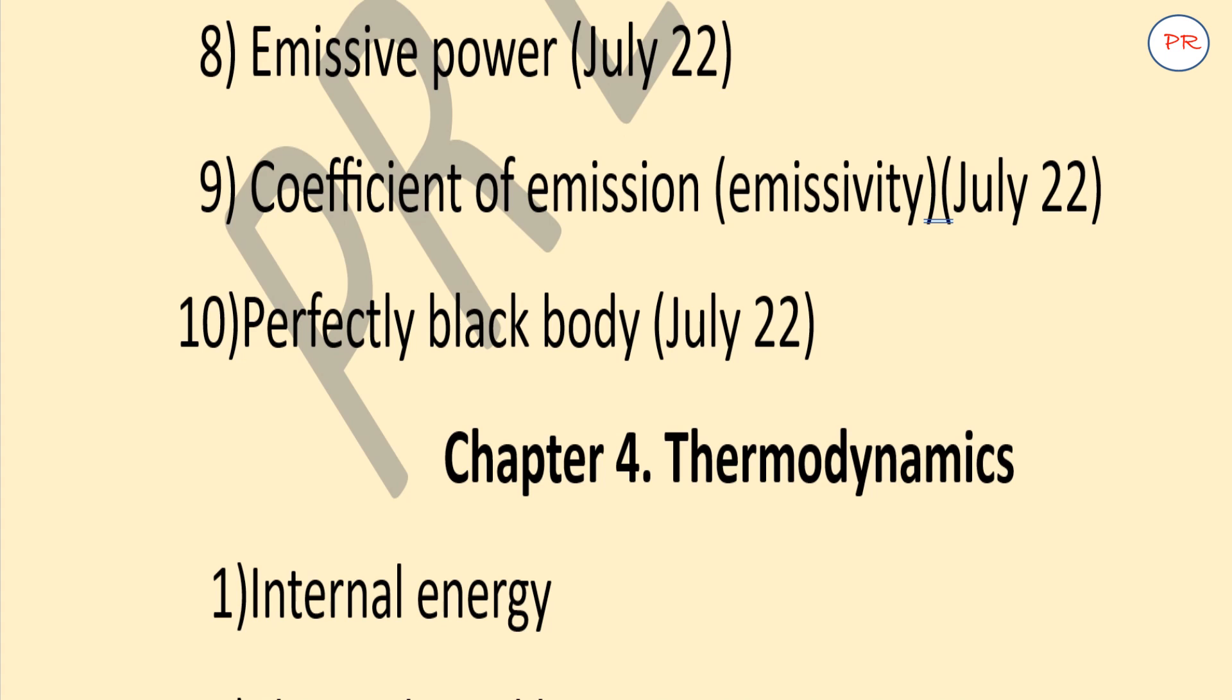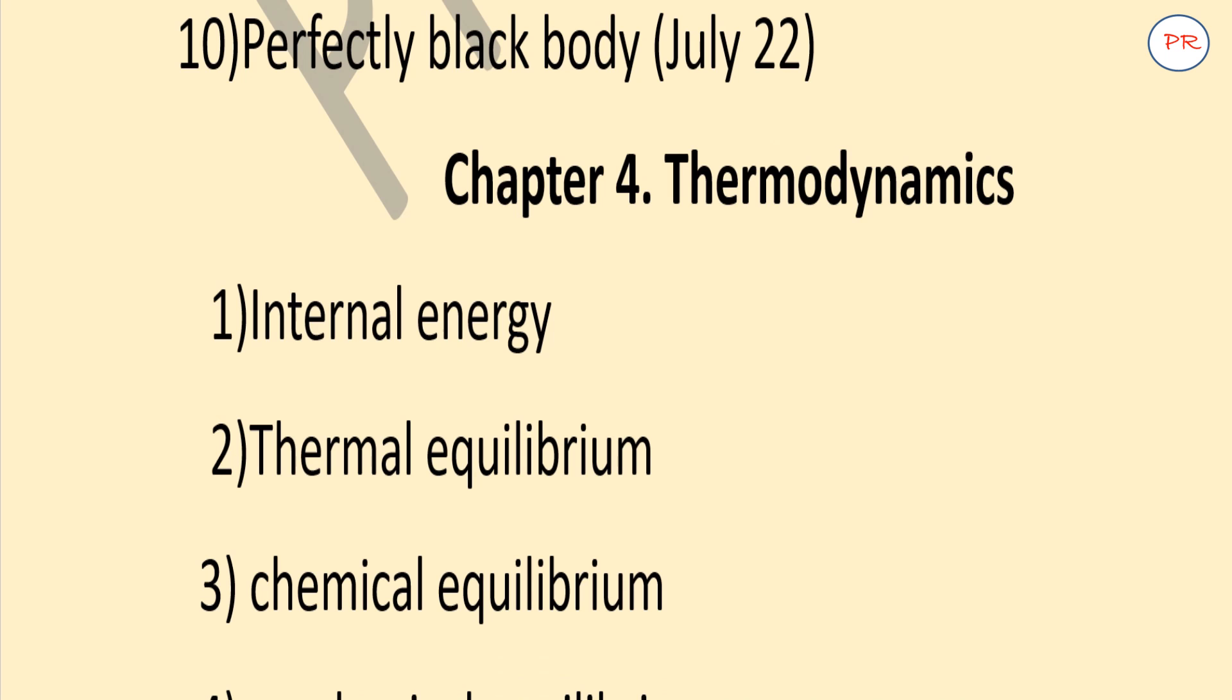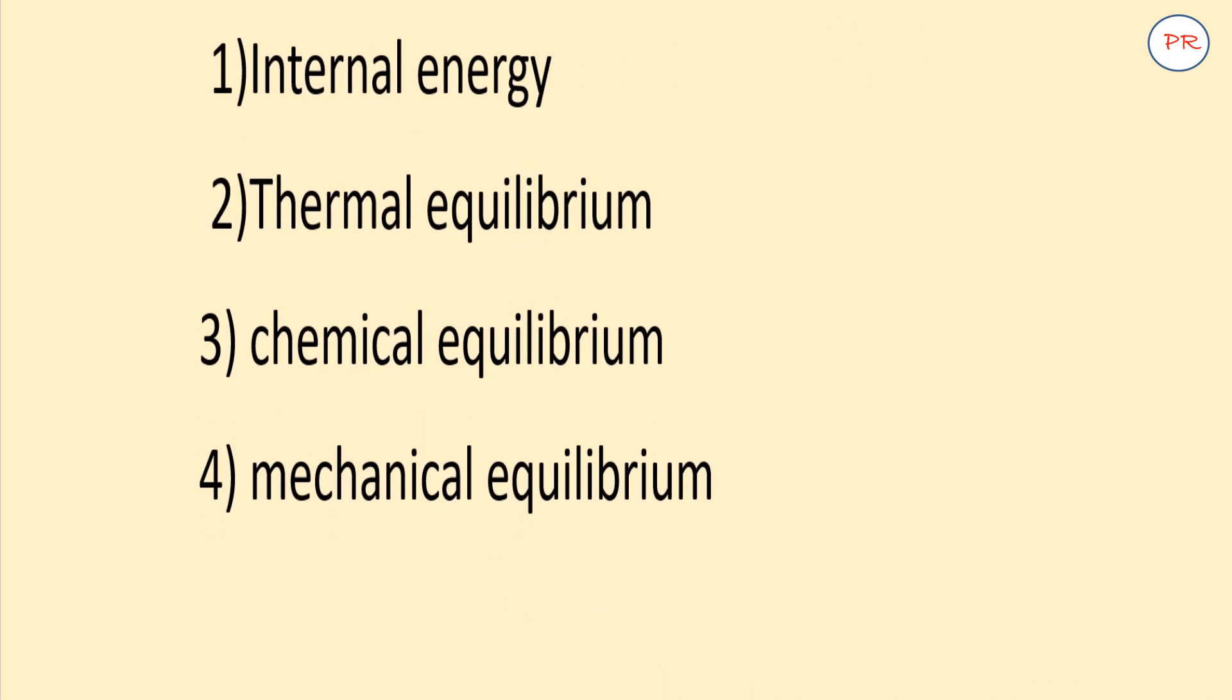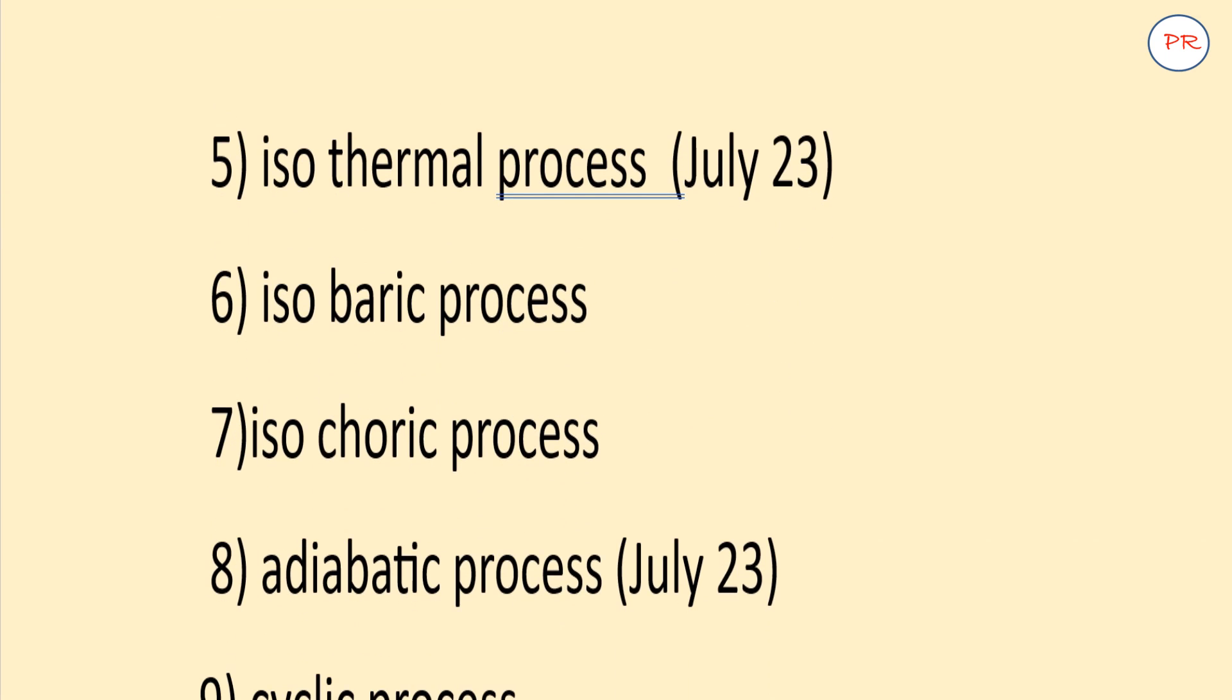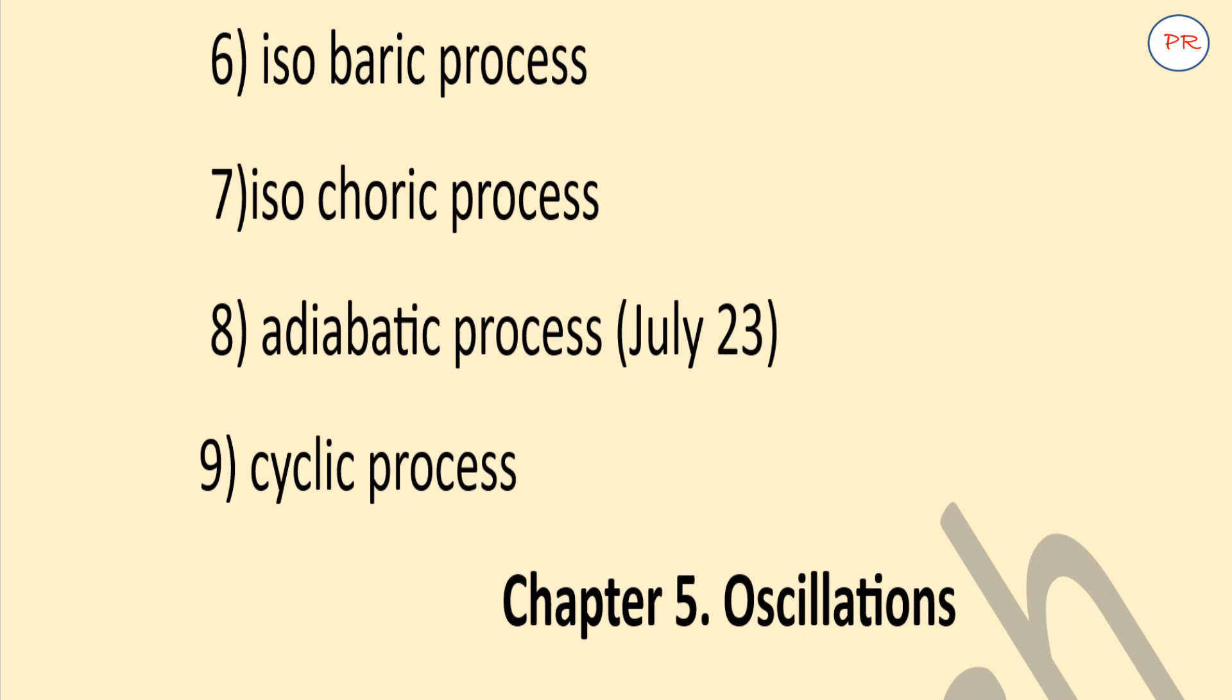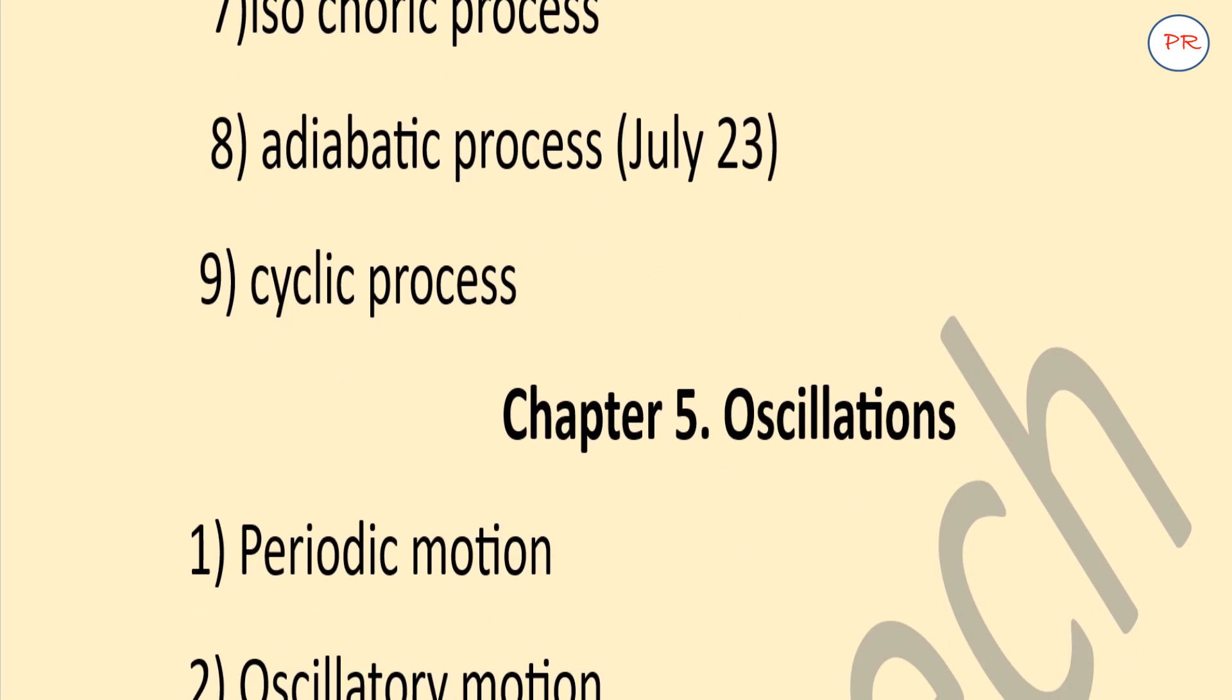Now Chapter 4: Thermodynamics. Internal energy, thermal equilibrium, chemical equilibrium, mechanical equilibrium. Now these are the different processes: isothermal process, isobaric process, isochoric process, adiabatic process, cyclic process.